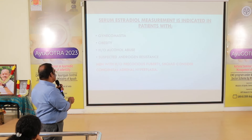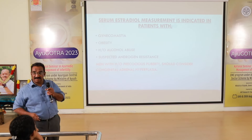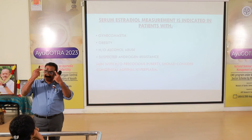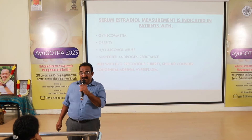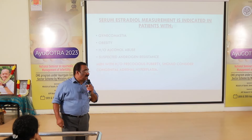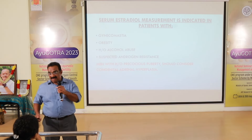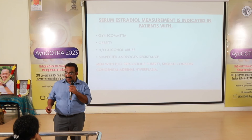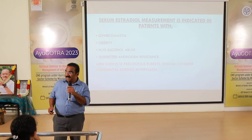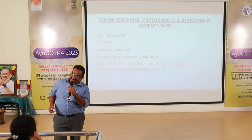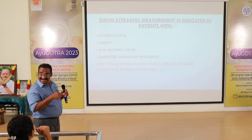In cases of obesity, alcohol abuse, or suspected androgen resistance, and in men with a history of precocious puberty — early development of secondary sex characteristics — one should consider congenital adrenal hyperplasia. Congenital adrenal hyperplasia can lead to premature or precocious puberty. In females, precocious puberty is defined as onset of menstruation before age 10, or development of secondary sex characters before age 8.